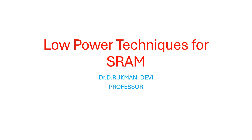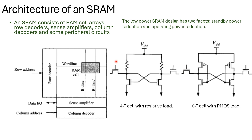Low power techniques for static random access memory. This is the architecture of a static random access memory. A static random access memory consists of RAM cell arrays, row decoders, sense amplifiers, column decoders and peripheral circuits. Peripheral circuits are outside — that is column address lines, data IO lines and row address lines.